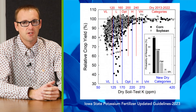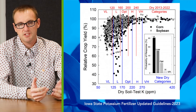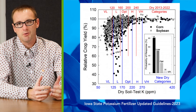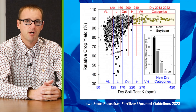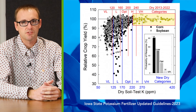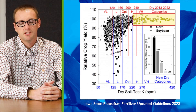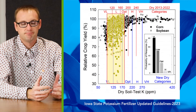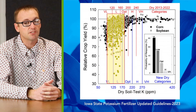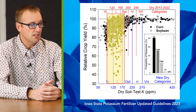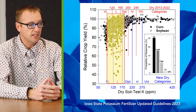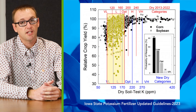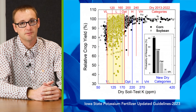The one thing that should strike you about this relationship is that it's pretty rough. Once you get above about 225 parts per million of potassium in the soil, yields are more or less maximized. But between 100 and 180 parts per million, there's a lot of variation. In some cases, you might achieve maximum yield with 140 parts per million, and in others, you might only get 65% of maximum yield.